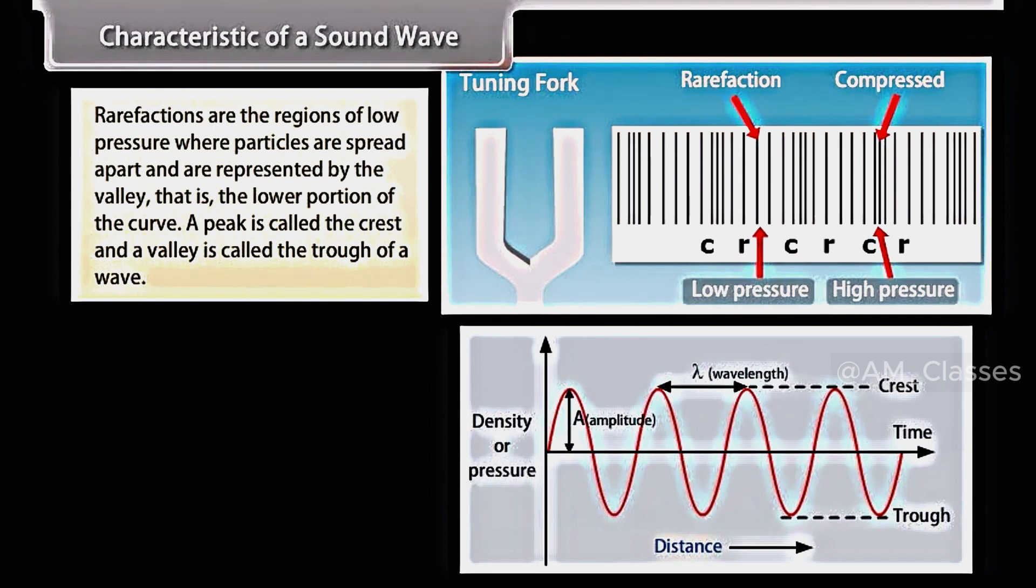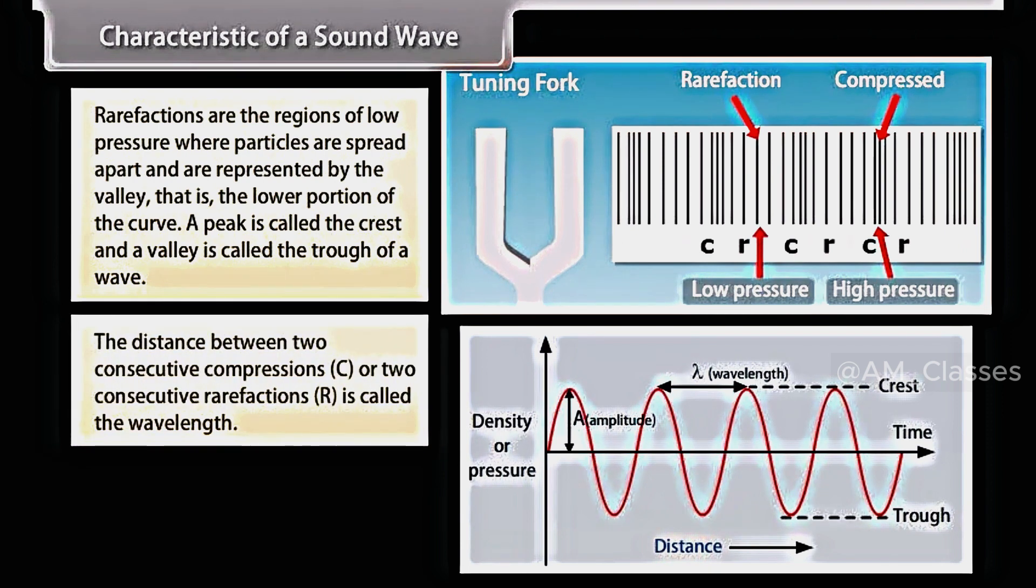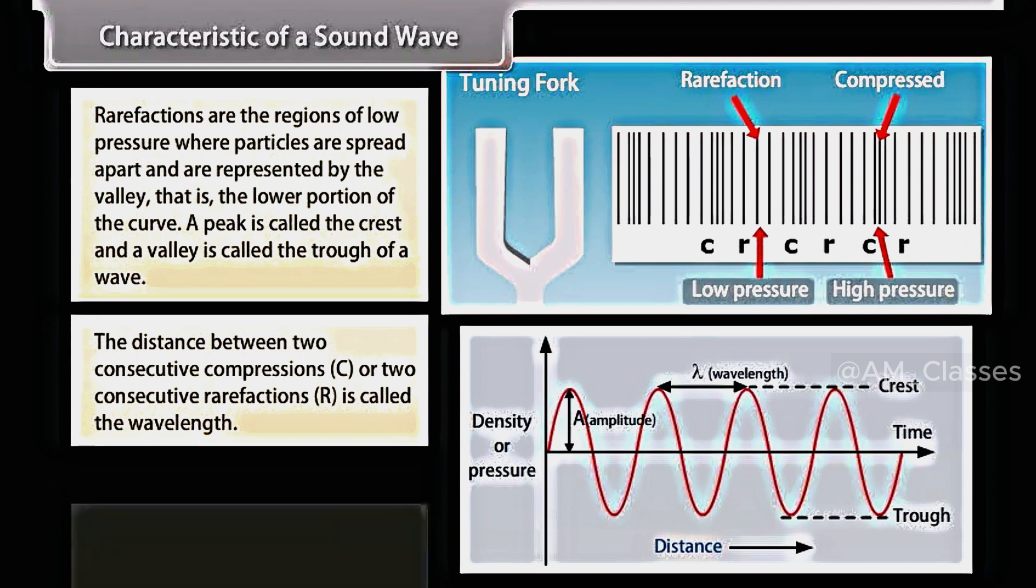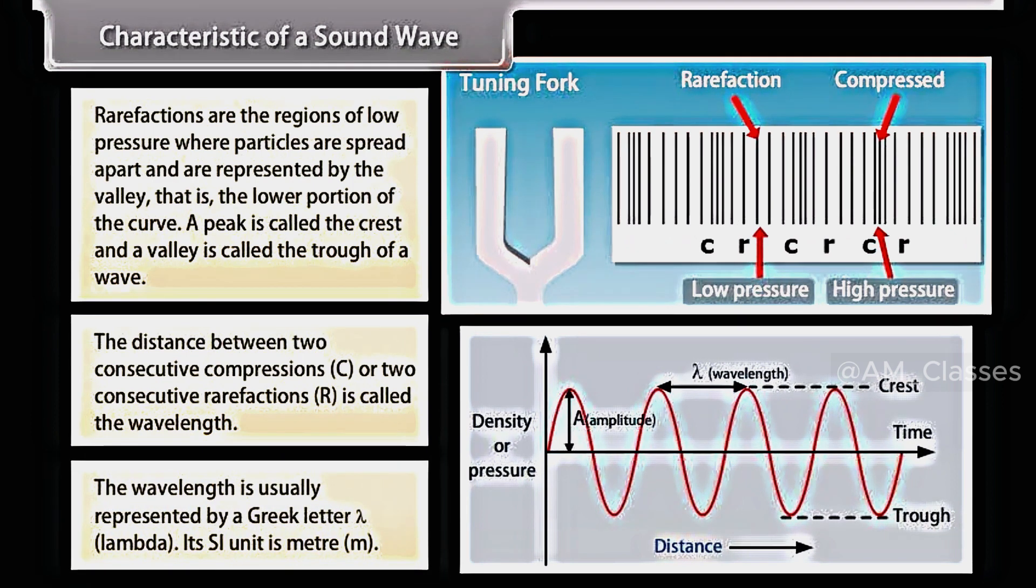A peak is called the crest and a valley is called the trough of a wave. The distance between two consecutive compressions or two consecutive rarefactions is called the wavelength. The wavelength is usually represented by a Greek letter, lambda. Its SI unit is meter, m.